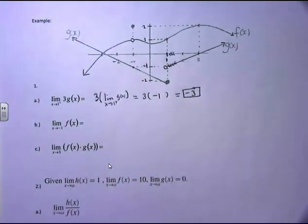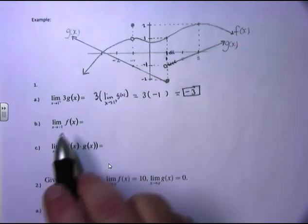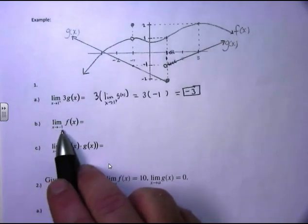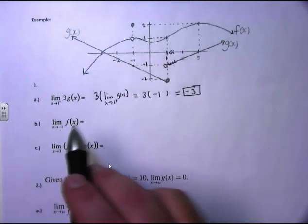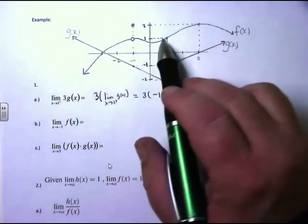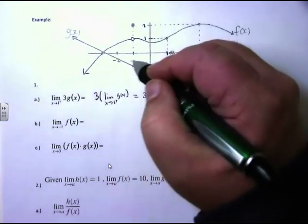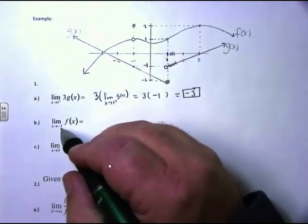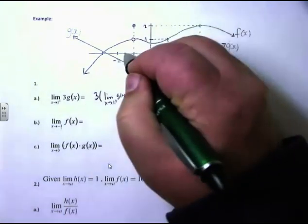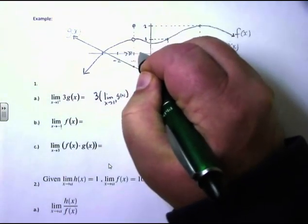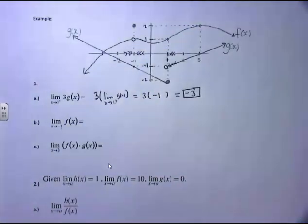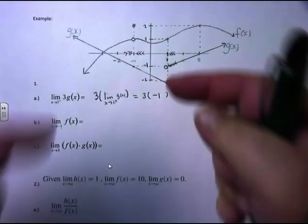This next problem is a full limit: take the limit as x approaches negative 1 of f of x. So, we're going to go to f of x, the function on top, and we're going to negative 1. Now, for a full limit, you've got to go from below and from above, and for a full limit to exist, the limit from below has got to be equal to the limit from above.